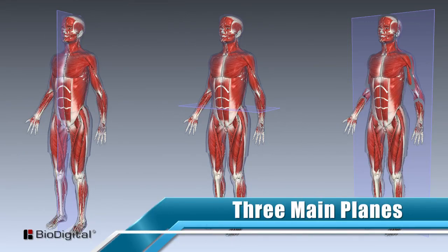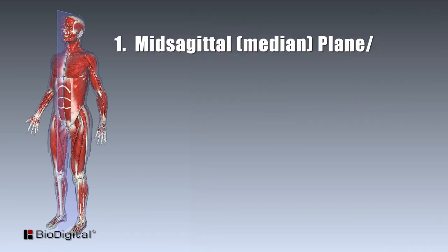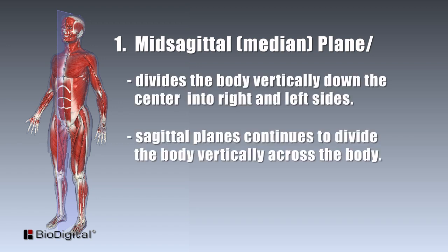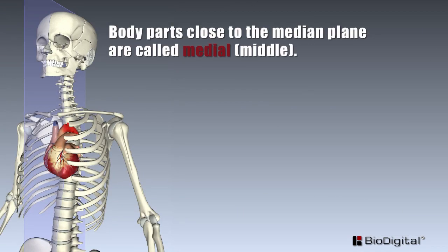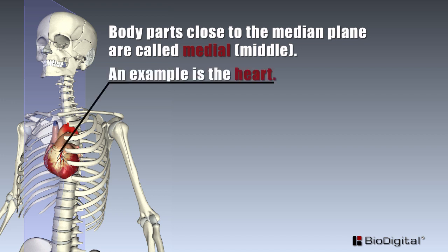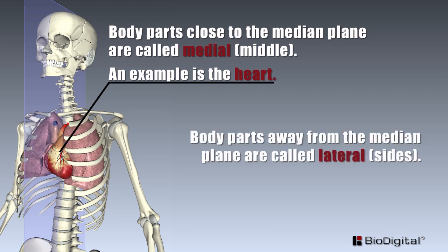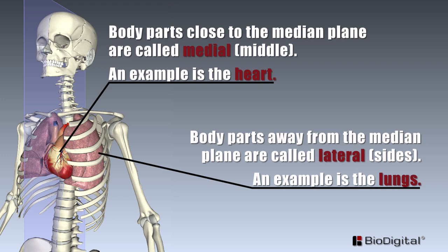Now let's take a look at the three main planes of the body. Number one, the mid-sagittal or median plane. The mid-sagittal divides the body vertically down the center into right and left sides. Sagittal planes continue to divide the body vertically across the body. Our first two directional terms come from the mid-sagittal plane. Body parts close to the median plane are called medial, or the middle. For example, the heart is medial. Body parts away from the midline or median are called lateral. The lungs are an example of lateral, because they are towards the side of the body.